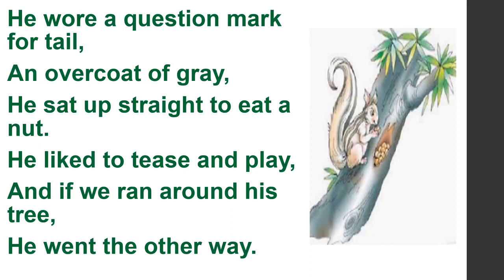The poem starts with the line: He wore a cushion mark for tail. It means that the squirrel's tail is shaped like a cushion mark. An overcoat of grey — overcoat means a long thick coat that you wear in cold weather. It means that the squirrel's fur is grey in colour, and the poet thinks that it is wearing an overcoat.